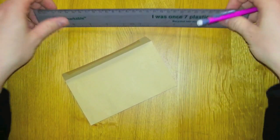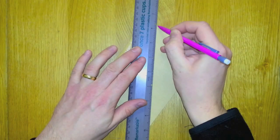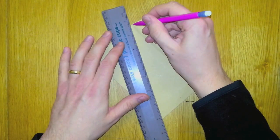To start with, you want to take your ruler and draw a diagonal line from the top corner just below the flap to the bottom corner. And then repeat the same thing on the other side.